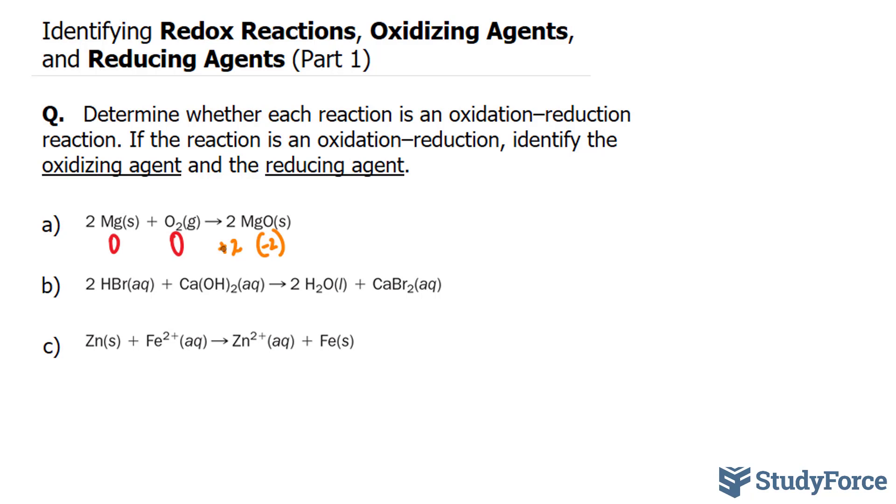Take a look at magnesium. It starts at zero and becomes plus two. There is a loss of electrons here. Therefore, magnesium is being oxidized. Part of the requirement of an oxidation-reduction reaction has been satisfied.